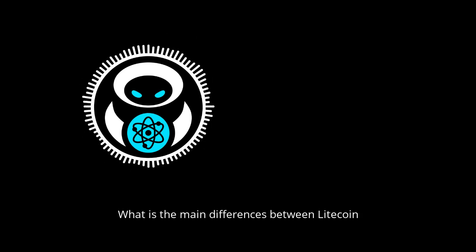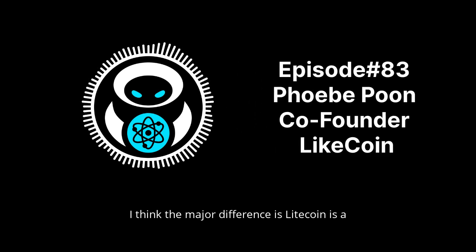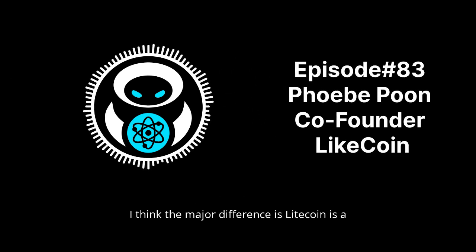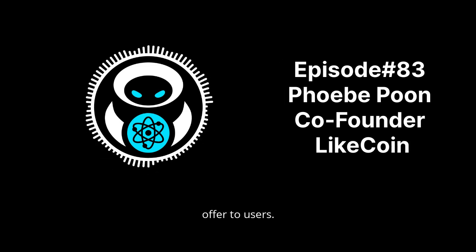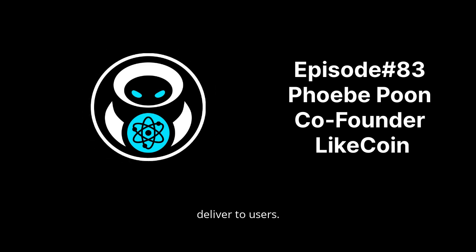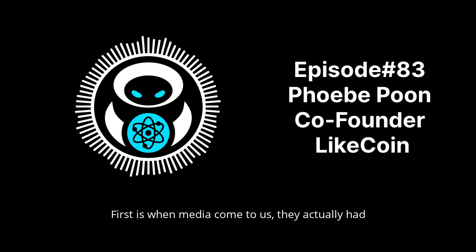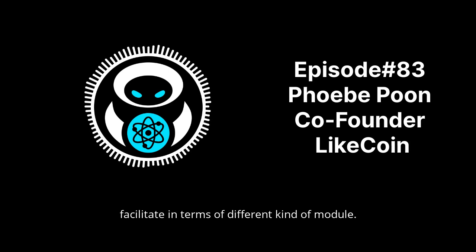What are the main differences between Litecoin from the value proposition compared to things like Steemit and Mirror? I think the major difference is Litecoin is a web-free publishing stack. It is not a particular platform that we want to offer to users. There are several layers that we want to deliver. First, when media come to us, they actually have an application-specific chain ready to facilitate different kinds of modules.